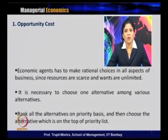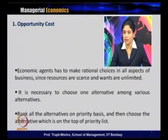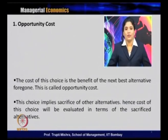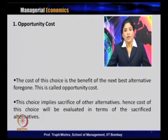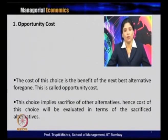Resources are scarce and wants are unlimited, so there are different alternatives to use the resources, and they can choose only one. They rank all alternatives on a priority basis and choose the top one. The cost of this choice is the benefit of the next best alternative forgone — and this is Opportunity Cost. When making a choice, any economic agent choosing one alternative incurs a cost equal to the benefit of the next best alternative forgone.